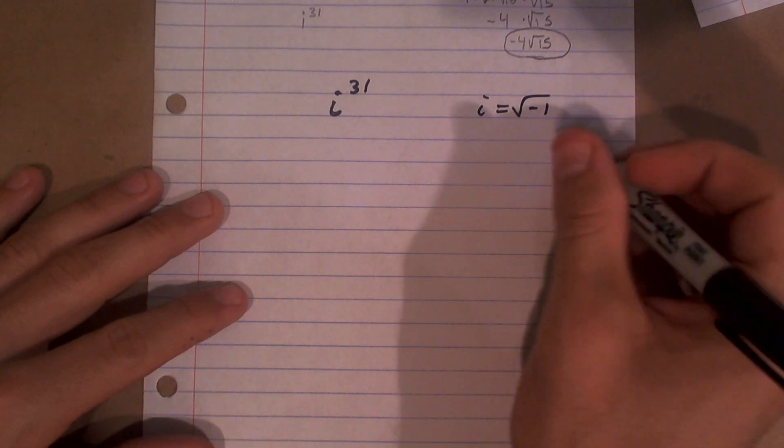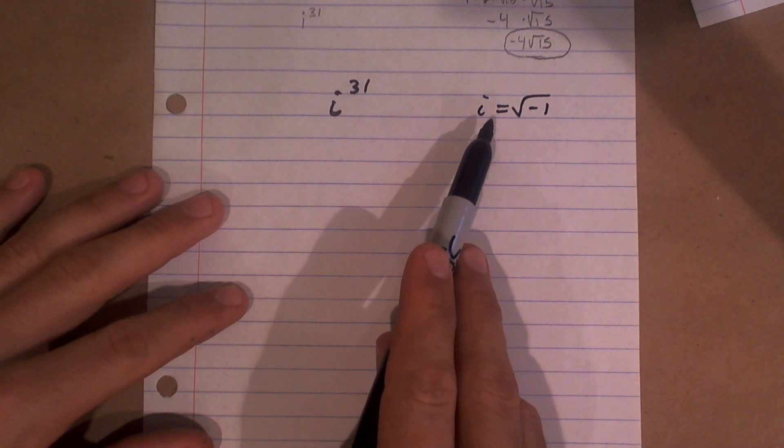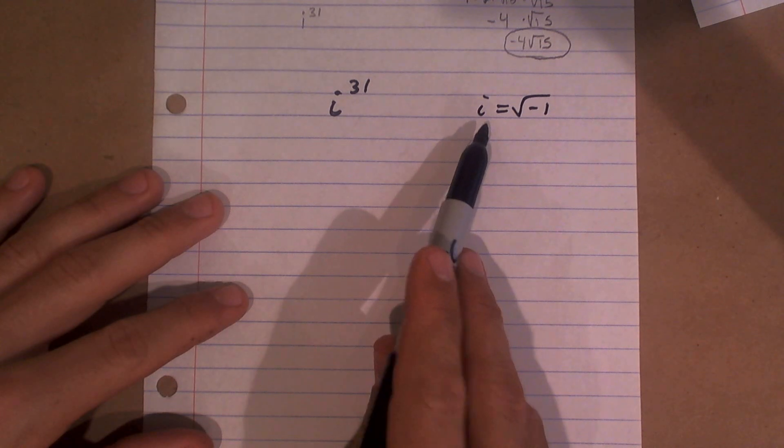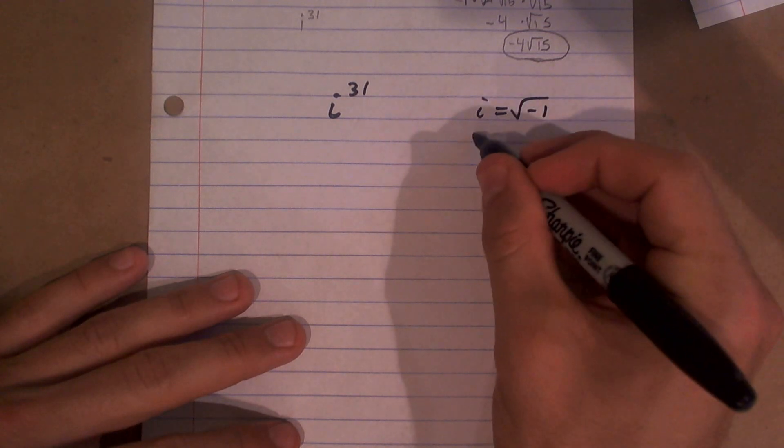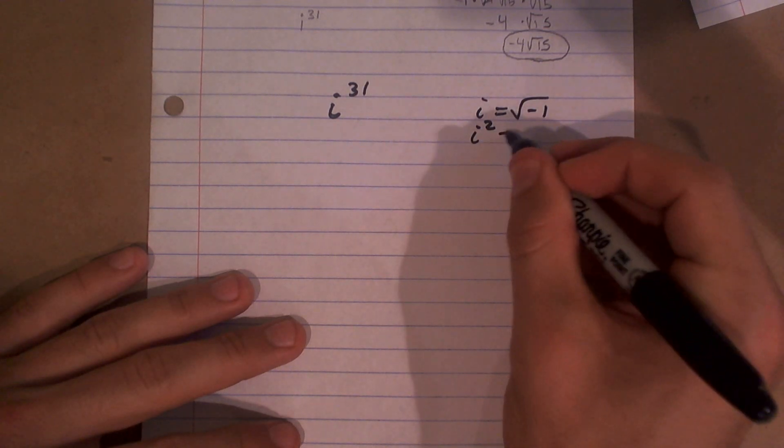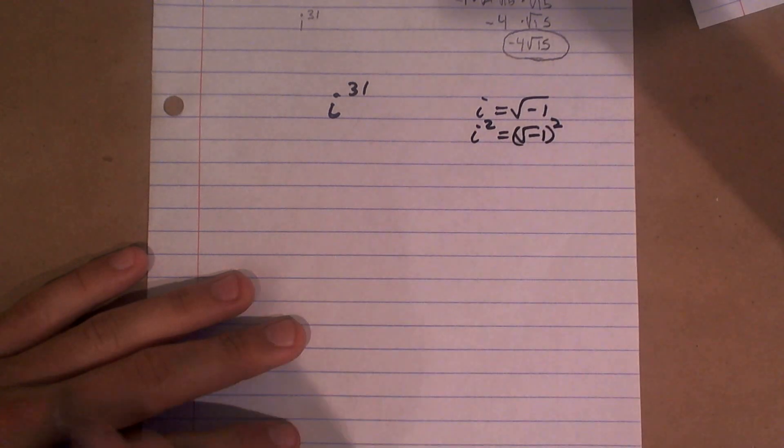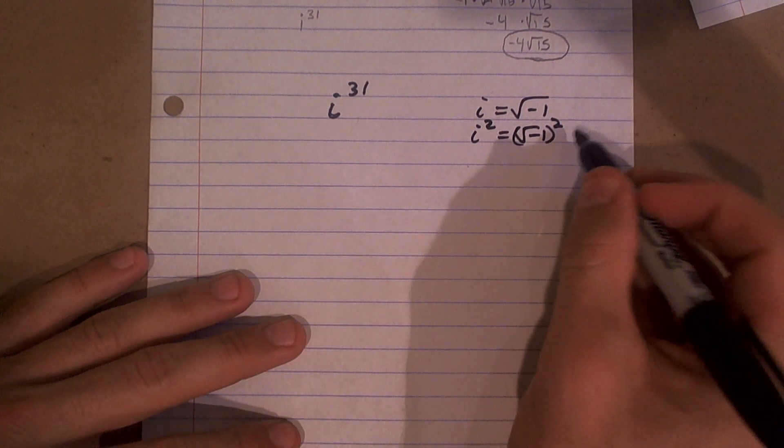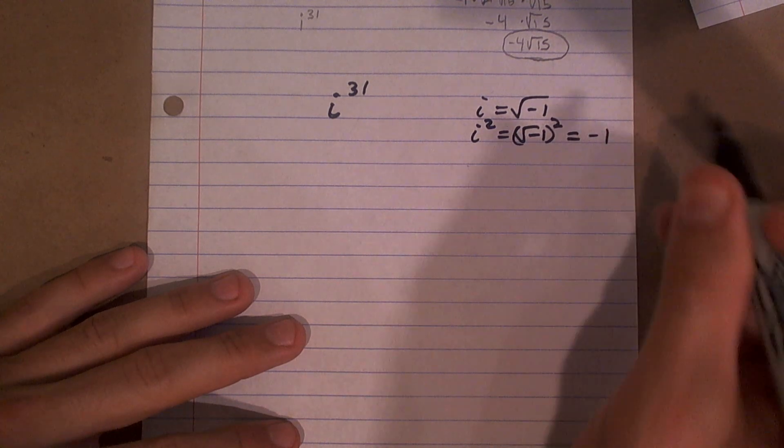Then what we did was we said, well, what happens if I square both sides? What happens if I say i times i? Well, we have to think about it. If we do i squared equals the square root of negative 1 squared, if we square both sides, the square root of negative 1 squared is just going to equal negative 1.